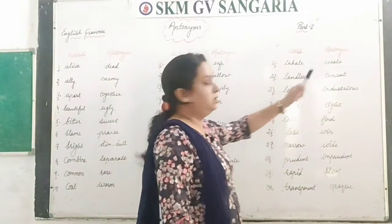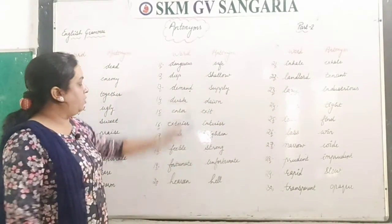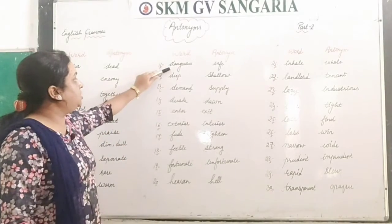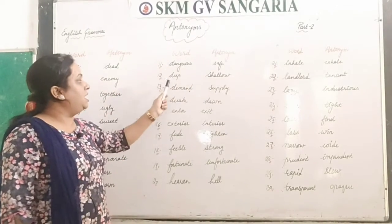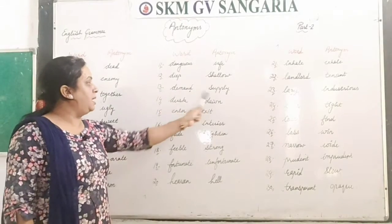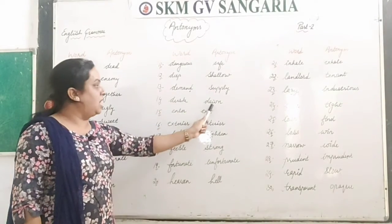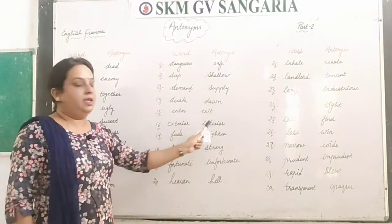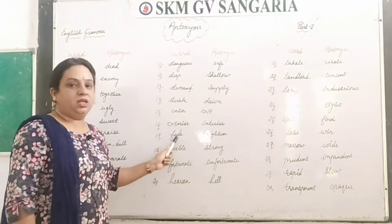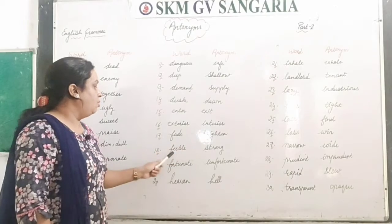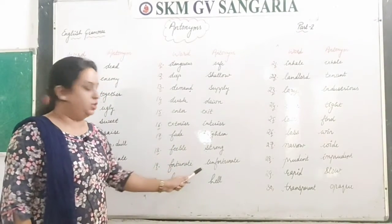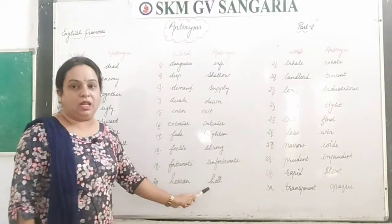Let's take a quick review — listen to the pronunciation: dangerous — safe; deep — shallow; demand — supply; dusk — dawn; enter — exit; exterior — interior; fade — brighten; feeble — strong; fortunate — unfortunate; heaven — hell.